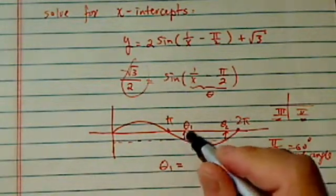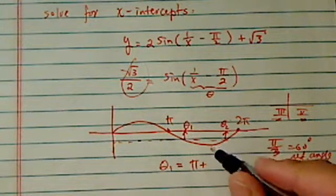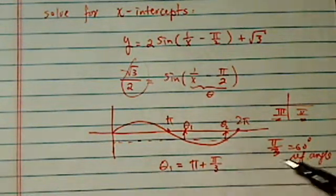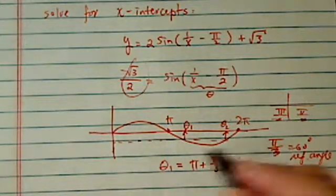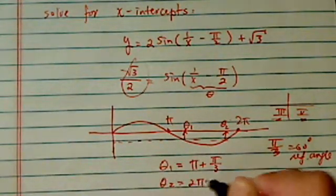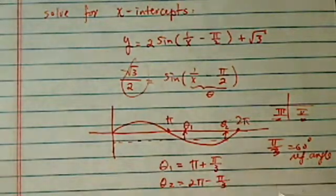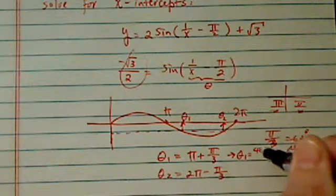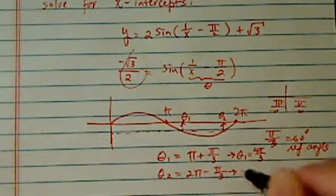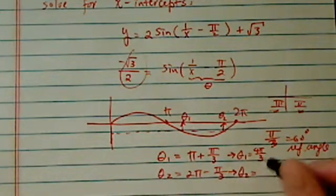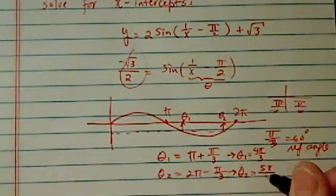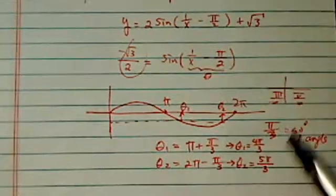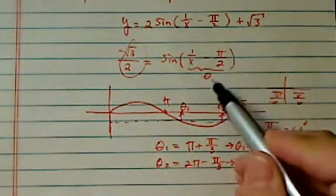Theta 1 is equal to pi plus pi over 3 — that's our 60 degrees. Theta 2 is equal to 2 pi minus pi over 3. So theta 1 is equal to 4 pi over 3, and theta 2 is equal to 5 pi over 3. Let's verify: 6 minus 1 is 5. Now we've found theta 1 and theta 2.